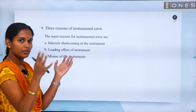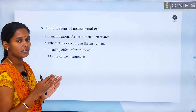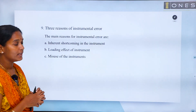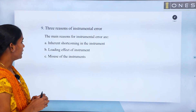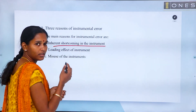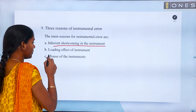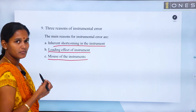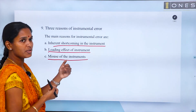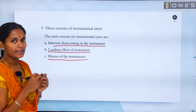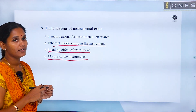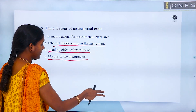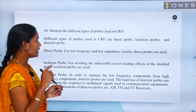There are three reasons for errors in instruments: first, inherent shortcomings of the instrument; second, loading effect; third, misuse of the instrument. Observations and the environment are also systematic sources of error in the system.